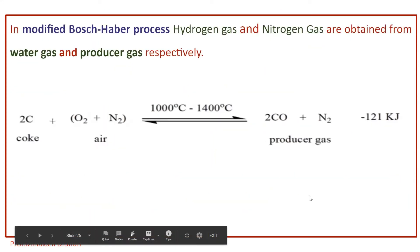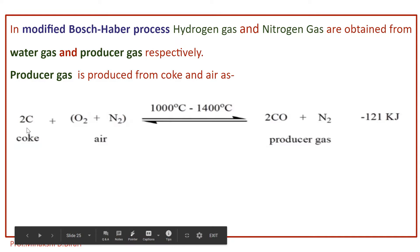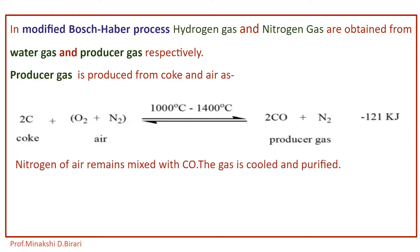The other reactant, nitrogen gas, is obtained from producer gas. Producer gas is produced from coke and air. Air contains O2 + N2, and the reaction is: 2C + O2 + N2 → 2CO + N2 (producer gas). The nitrogen of air remains mixed with CO and the gas is cooled and purified. Thus, hydrogen and nitrogen are obtained from water gas and producer gas respectively in the modified Bosch-Haber process.